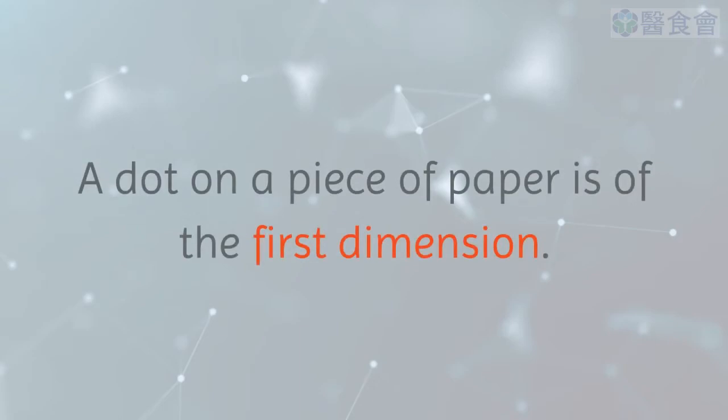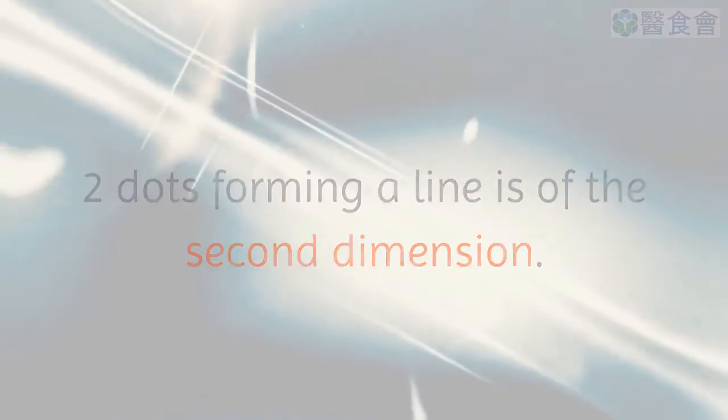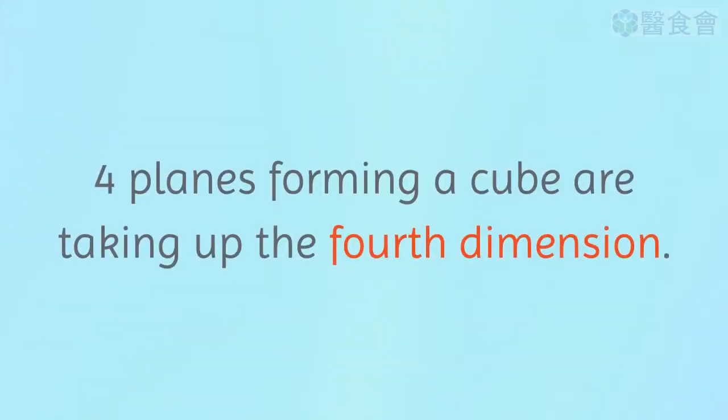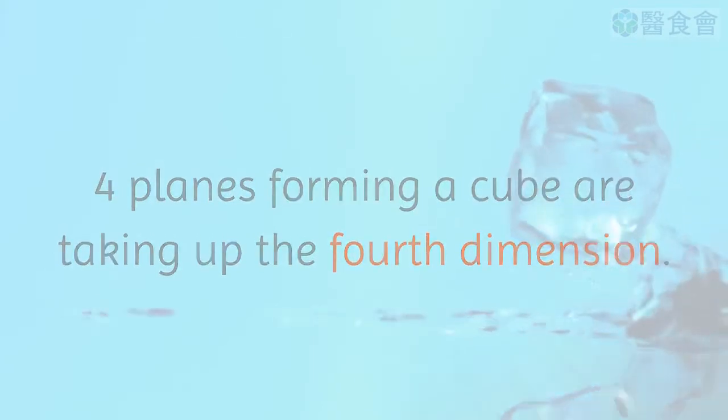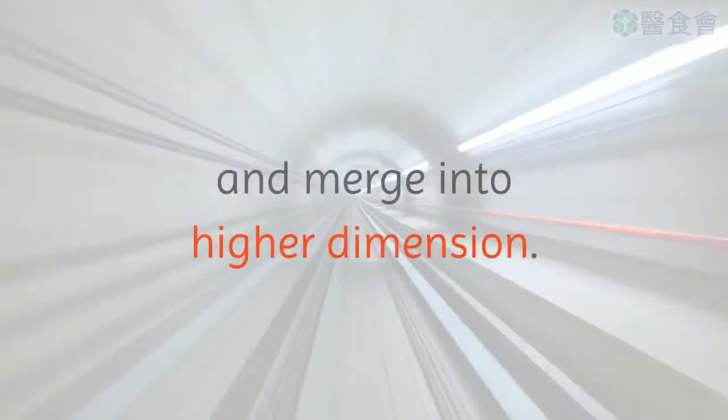A dot on a piece of paper is of the first dimension. Two dots forming a line is of the second dimension. Four dots forming a plane is of the third dimension. Four planes forming a cube are taking up the fourth dimension. Add speed to it and it will transcend the fourth dimension and merge into higher dimension.